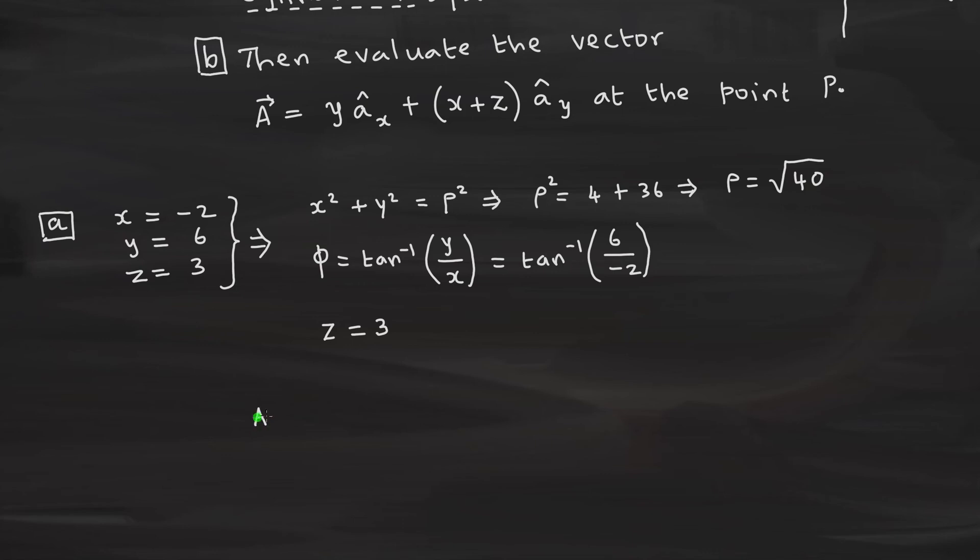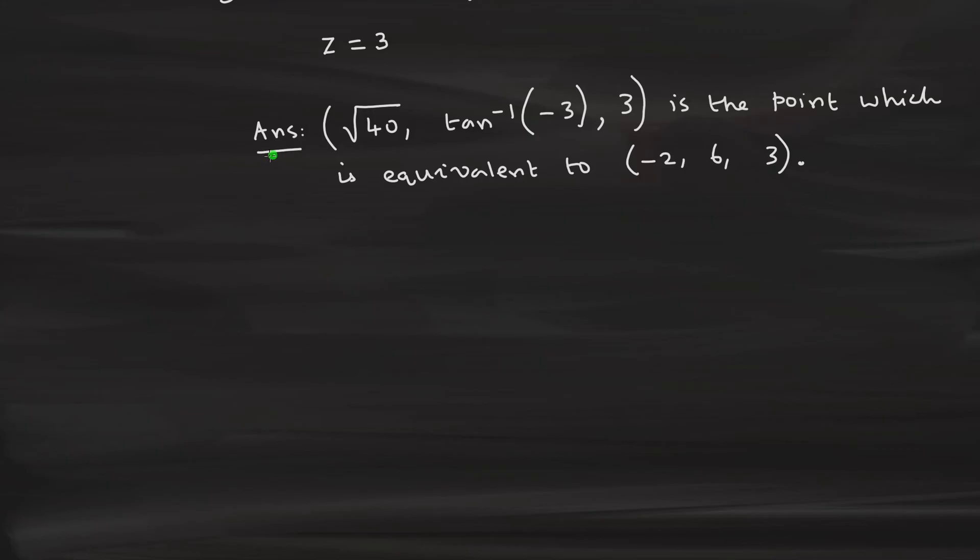Therefore, our answer is given by minus 2 comma 6 comma 3. That's all. That is the answer. What is the meaning of the answer? The answer says that there is a point in this space. You have some three-dimensional space. And in this particular space, you have a point P. This point P, whatever you write minus 2 comma 6 comma 3 is identically same as that is the meaning. Point doesn't change. It's only an alternate representation changes.